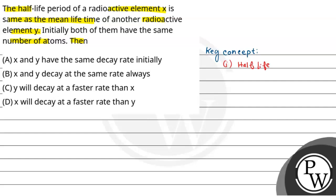The half-life, t-half, is equal to ln(2), that is 0.693, divided by lambda. Here lambda is the decay constant. This is the expression for half-life.